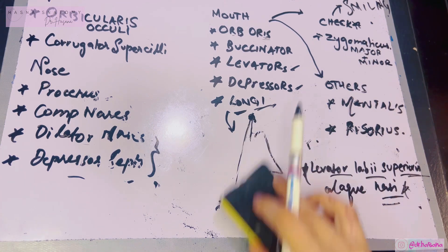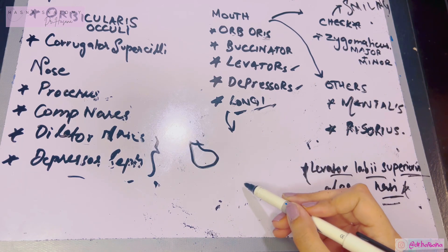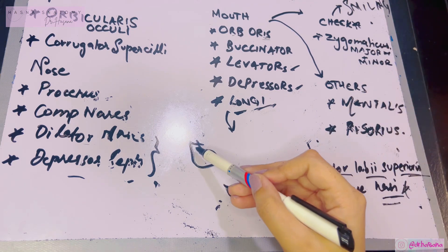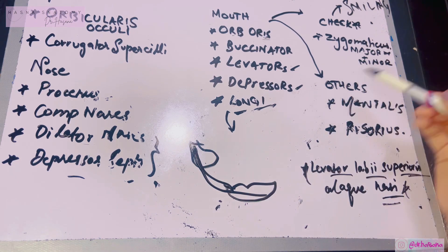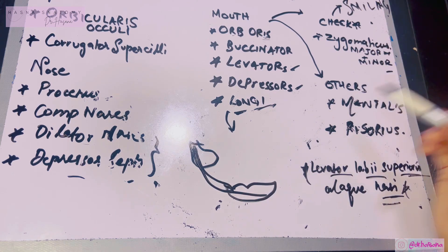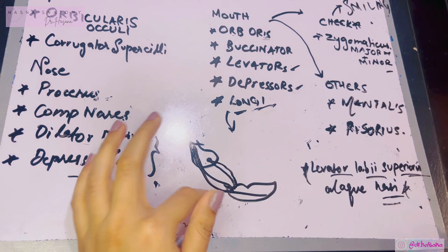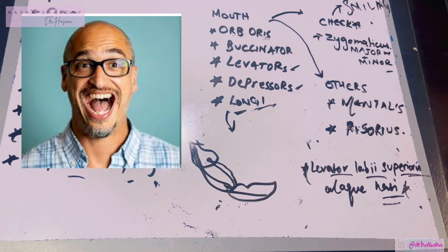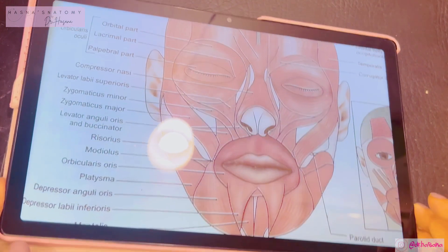The cheekbone is the zygomatic bone. The zygomaticus major comes from the posterior aspect of the zygomatic bone and inserts into the angle of the mouth — it elevates the angle of the mouth, producing a smile. It is the chief smiling muscle. The zygomaticus minor travels a shorter distance, coming from the anterior aspect of the zygomatic bone and inserting into the upper lip just medial to the angle of the mouth — it elevates the upper lip.